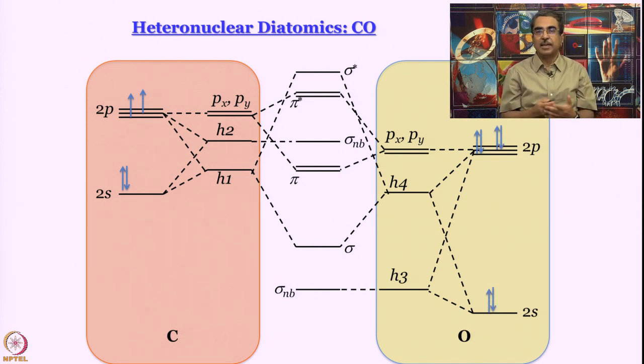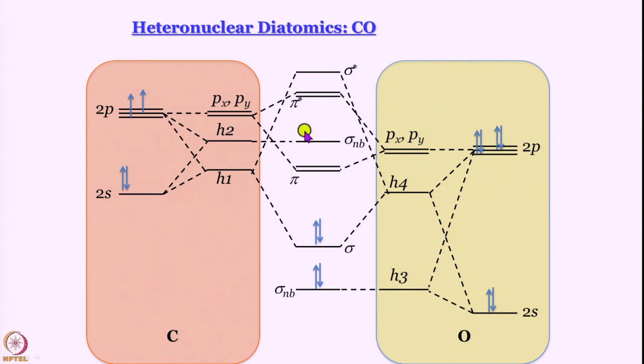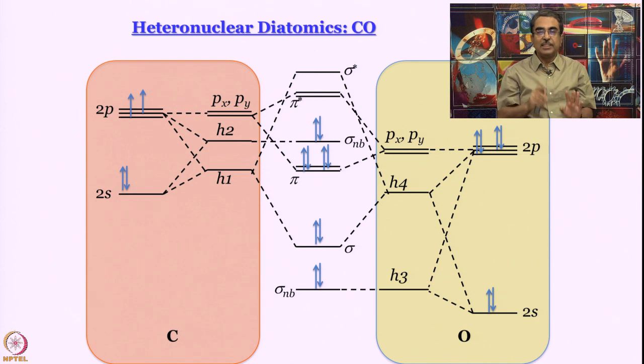When we fill them, again there is no memory. How do we fill them? The lowest energy MO has two electrons, the higher one has two. Next, we have two degenerate pi bonding orbitals. So, there we are going to accommodate not one electron pair, but actually two electron pairs. How many are taken care of? Two, four, six, eight, two more are there. Where will it go? It will go to this, sigma non-bonding. So, this is the electron configuration by our proposed model.